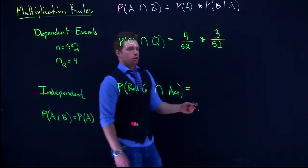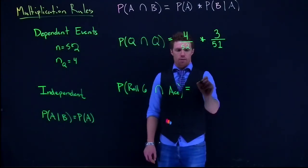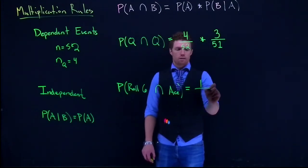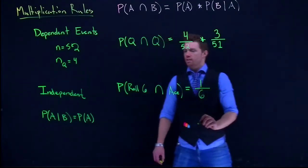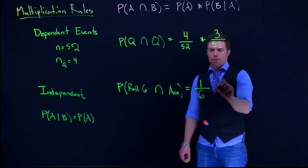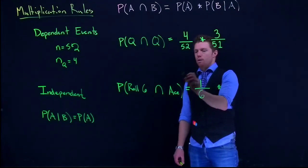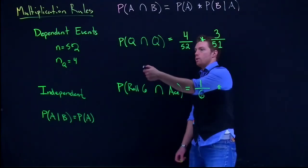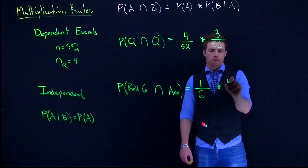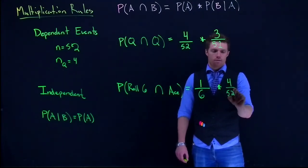So this one is pretty easy. Rolling a 6, the probability is one event on the dice divided by the total of 6 outcomes that we have. And we're going to multiply that by just the probability of drawing an ace. Just like the queen, there are 4 aces in the deck divided by 52.